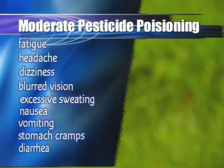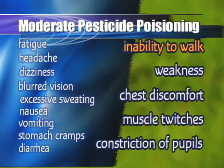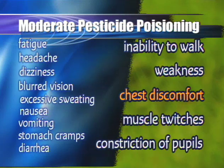Moderate pesticide poisoning will include all of those symptoms plus the inability to walk, weakness, chest discomfort, muscle twitches, and constriction of pupils.